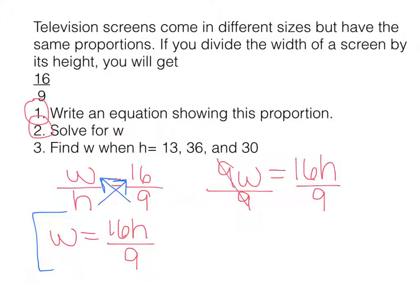So now for part 3, it's a lot easier to solve this. It says to find w when h is 13, 36, and 30. Now all we need to do is substitute each of those h's with 13, then find your answer, 36, then find your answer, and then 30. Bring these solutions to class. Once you have these answers, press play to move on to the next problem.